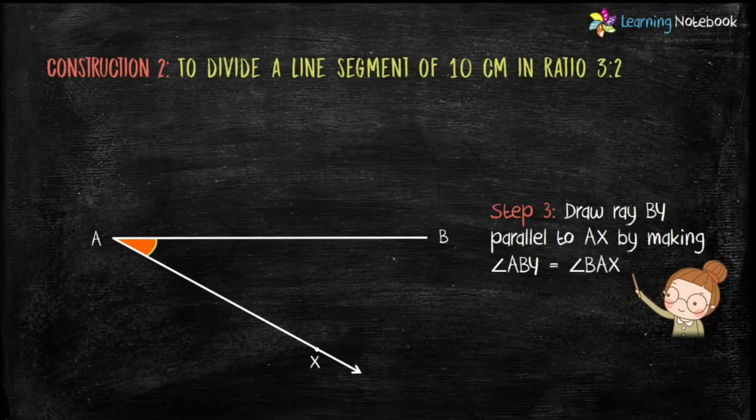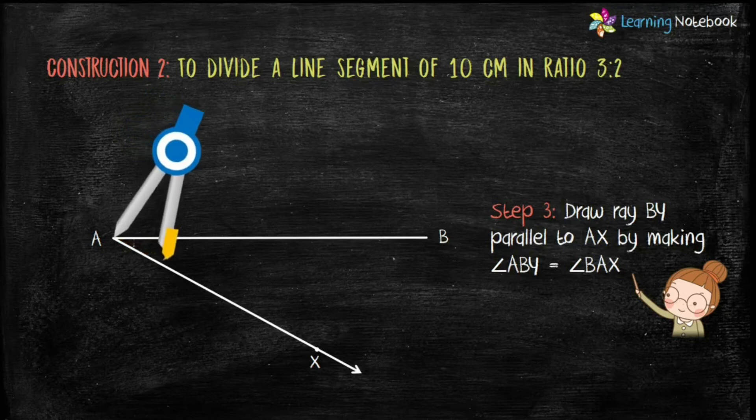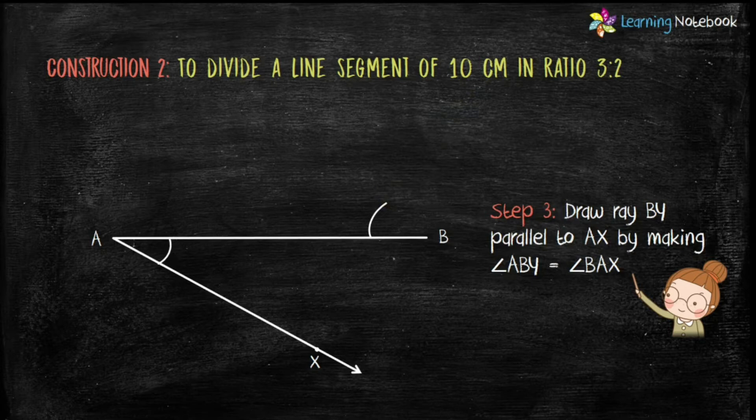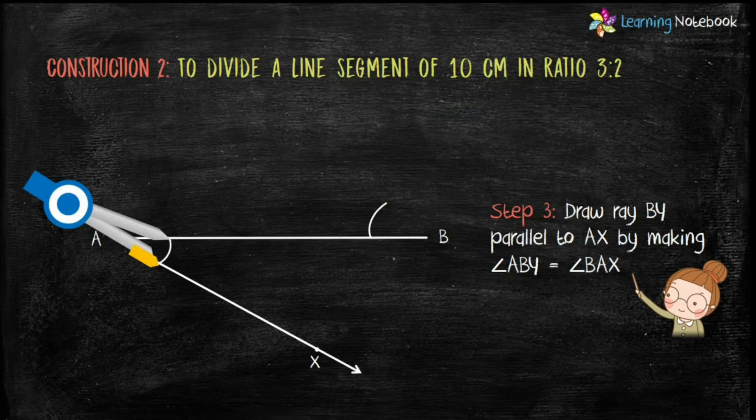First, draw an arc from point A. Keeping the same radius, draw an arc from point B. Now, come back to arc A. Place the compass on one end and open the compass to measure the angle at A.